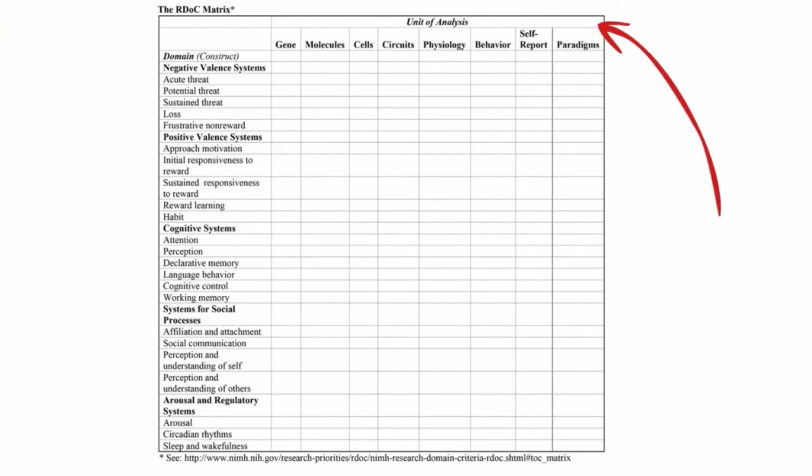The top of the graph is composed of the units of measure. In layman's terms, these are different ways that you can measure brain function. For instance, researchers may use psychological self-report surveys, genetics, brain circuits shown in fMRI scans, descriptions of the specific kinds of cells involved, and molecules that may function as neurotransmitters.